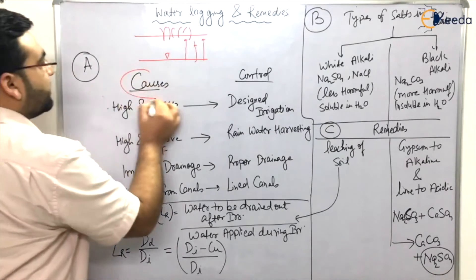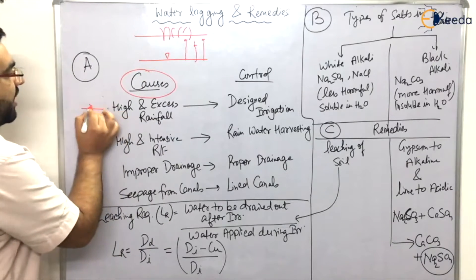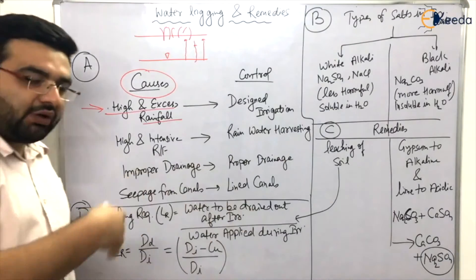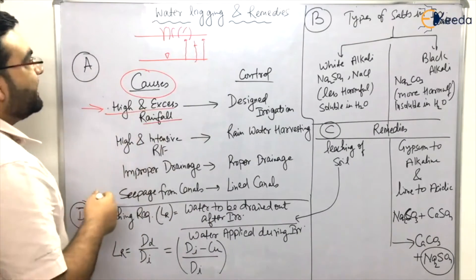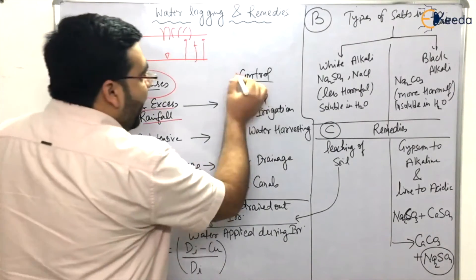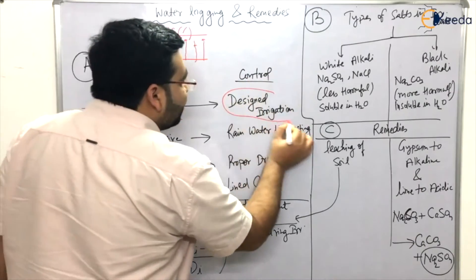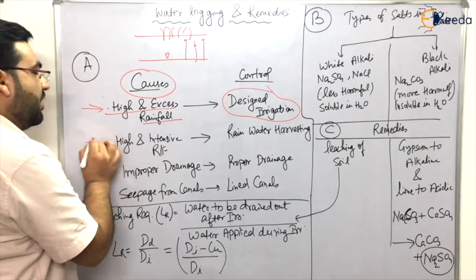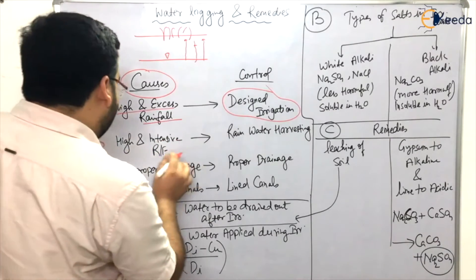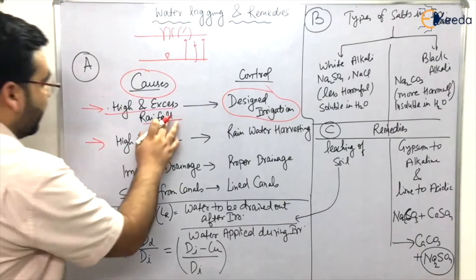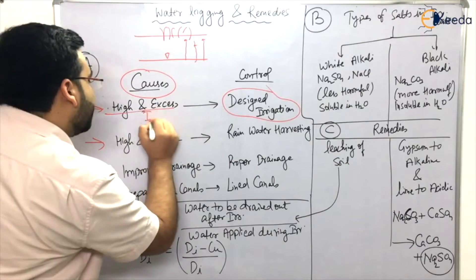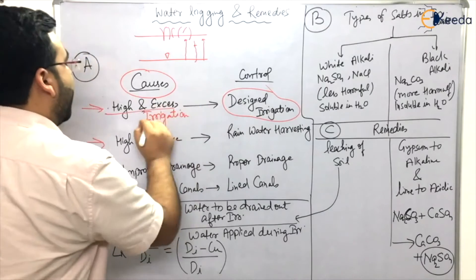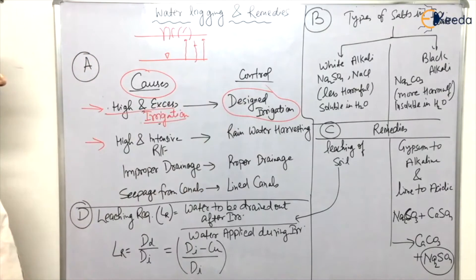The causes of water logging: the first cause is high and excess rainfall in a particular catchment area. This can be controlled by a well-designed irrigation system. Another cause is high and intensive irrigation — excess irrigation — which can also be controlled by designing a proper irrigation system.